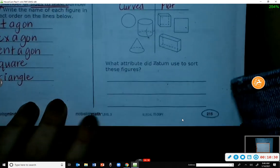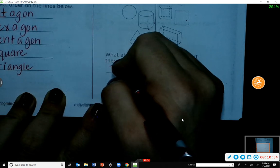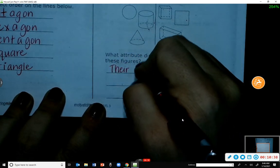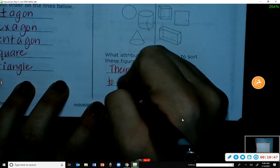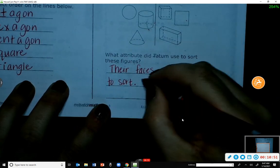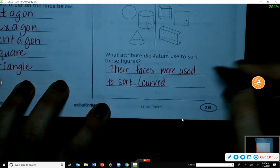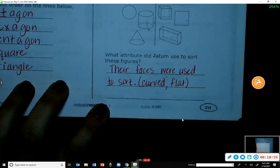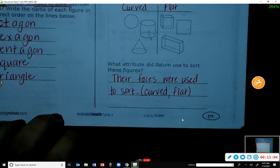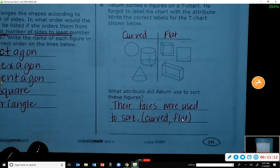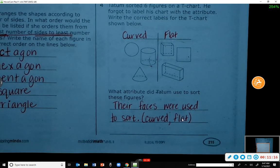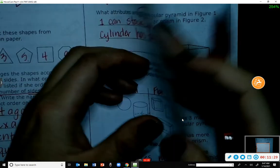So what attributes did Tatum use to sort these figures? We could say their faces were used to sort. You have curved faces or surfaces and flat surfaces. So that's basically what you're going to be doing in a nutshell today - sorting shapes, looking at their attributes, trying to figure out how they can be sorted, how they can be left out. Does that make sense?